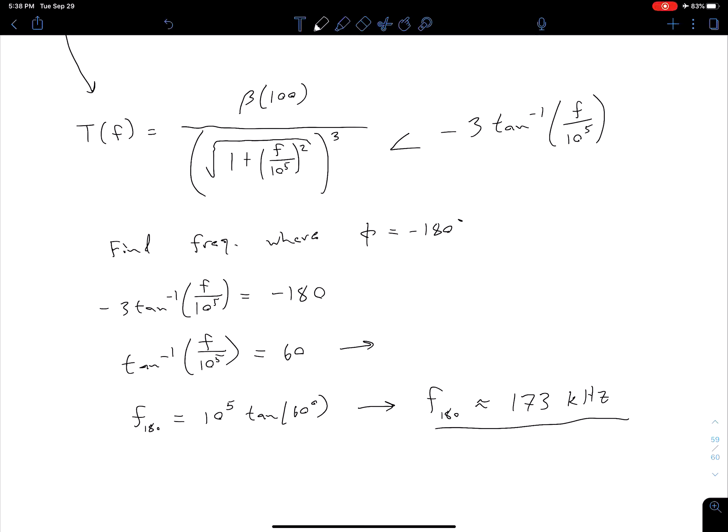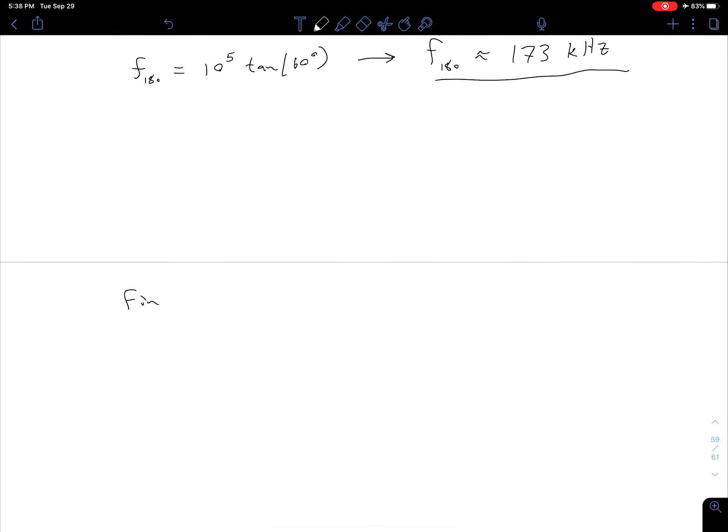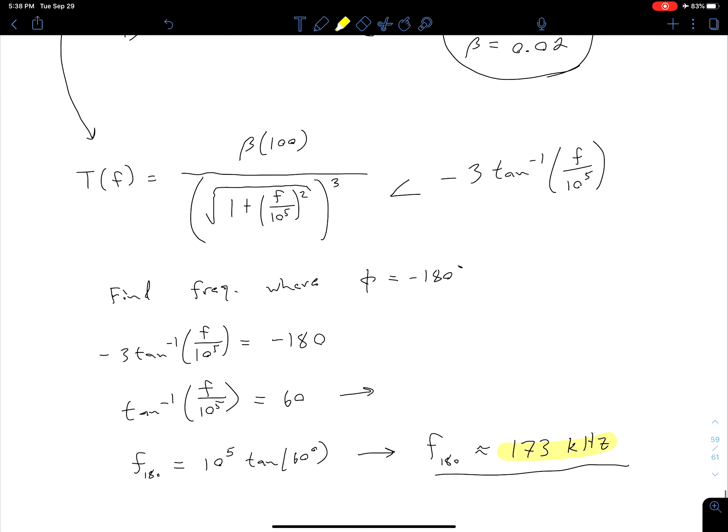Okay so now we have the frequency at which our phase is negative 180. So now what we want to do is find the magnitude at that frequency. Find our magnitude of that loop gain at our frequency 180 and because we have different beta values we're going to do this for each of our two beta values. We're going to take this frequency of 173 kilohertz, plug it in here and if you do that this denominator term with our cube becomes approximately eight.